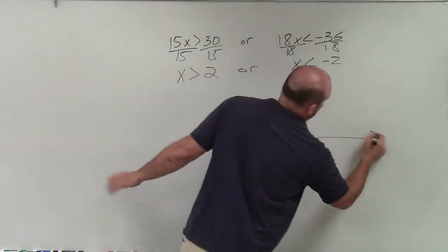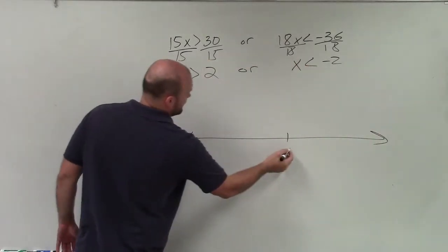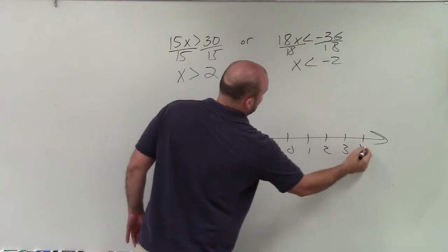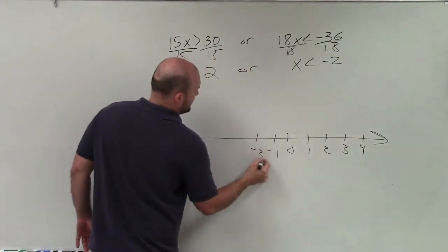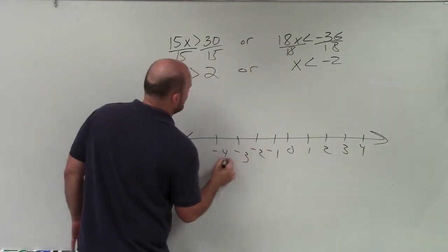So when looking at this, let's say I have 0, 1, 2, 3, 4, negative 1, negative 2, negative 3, negative 4.